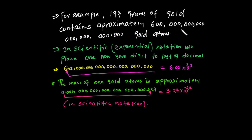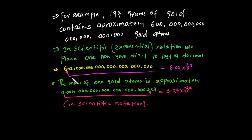For example, the number 3,000,000 in scientific notation: we place the decimal after the first digit and count the remaining digits. So 602,000,000,000,000,000,000,000 becomes 6.02 times 10 to the power of 23.